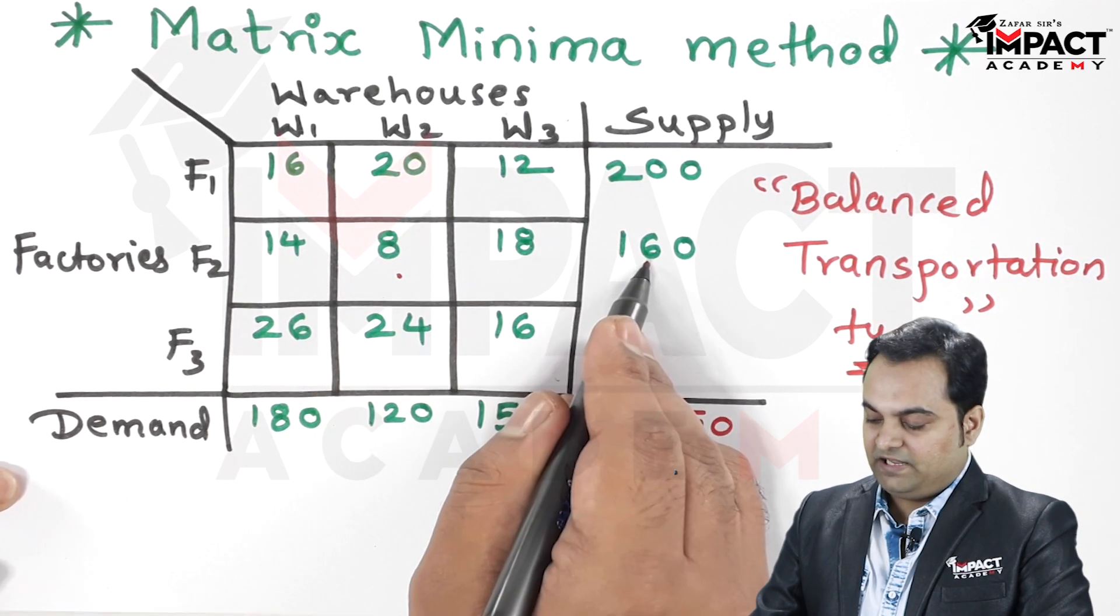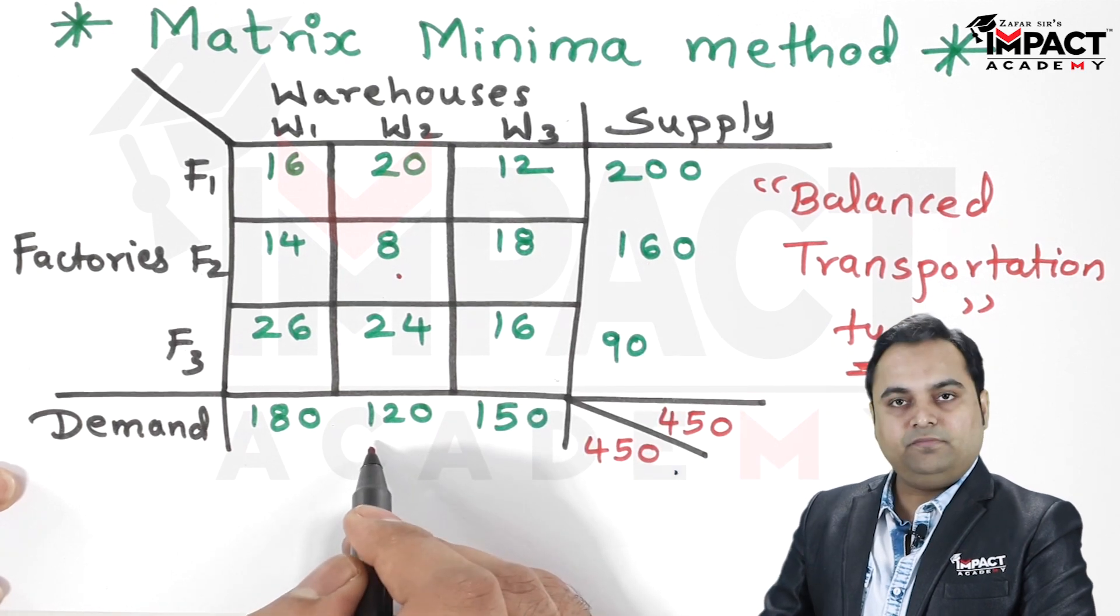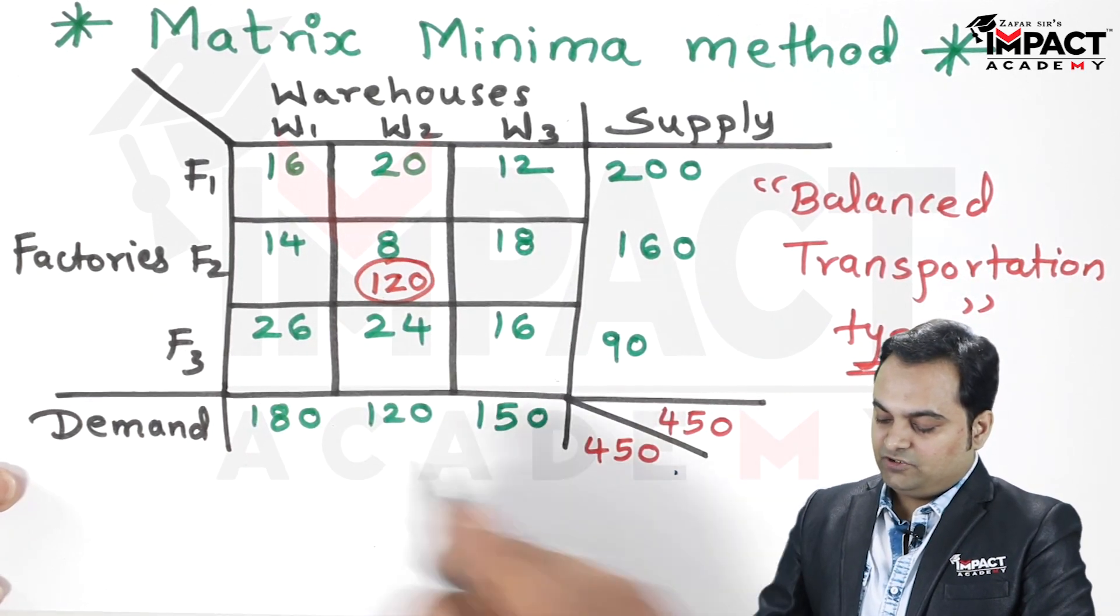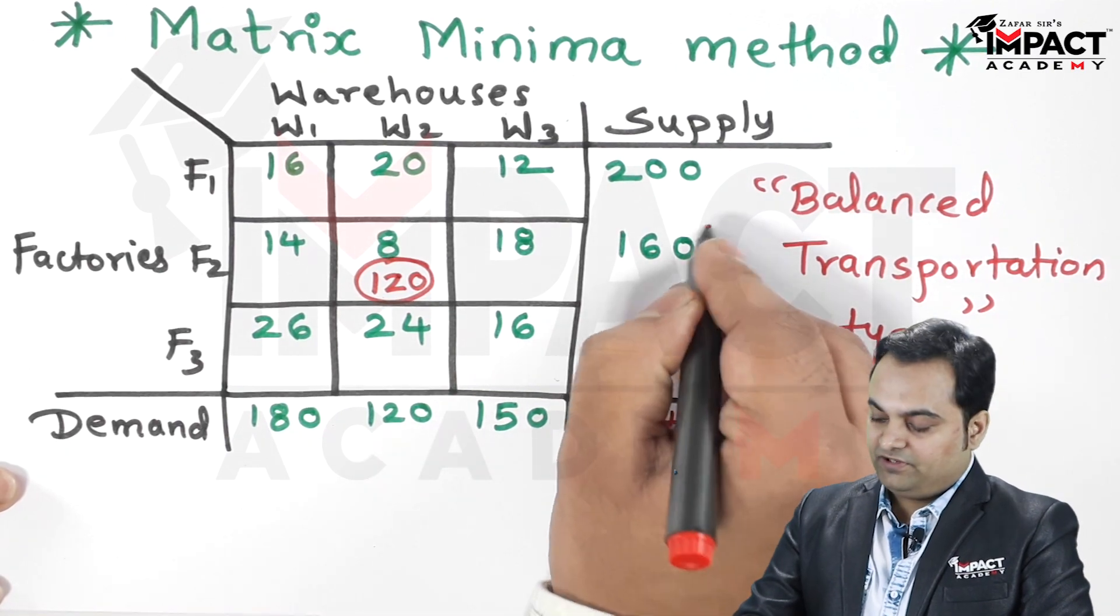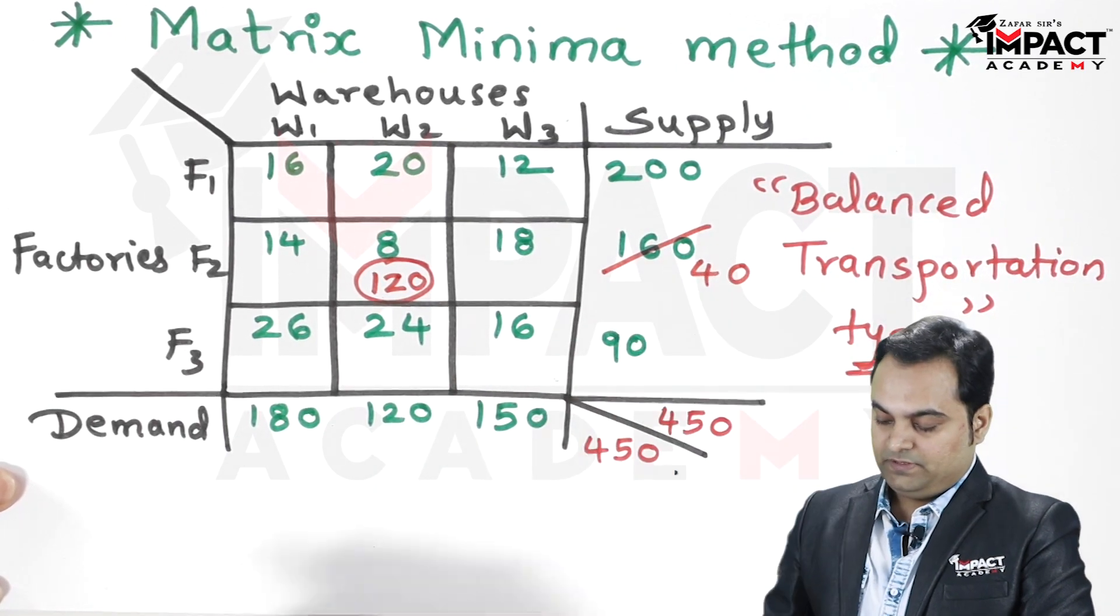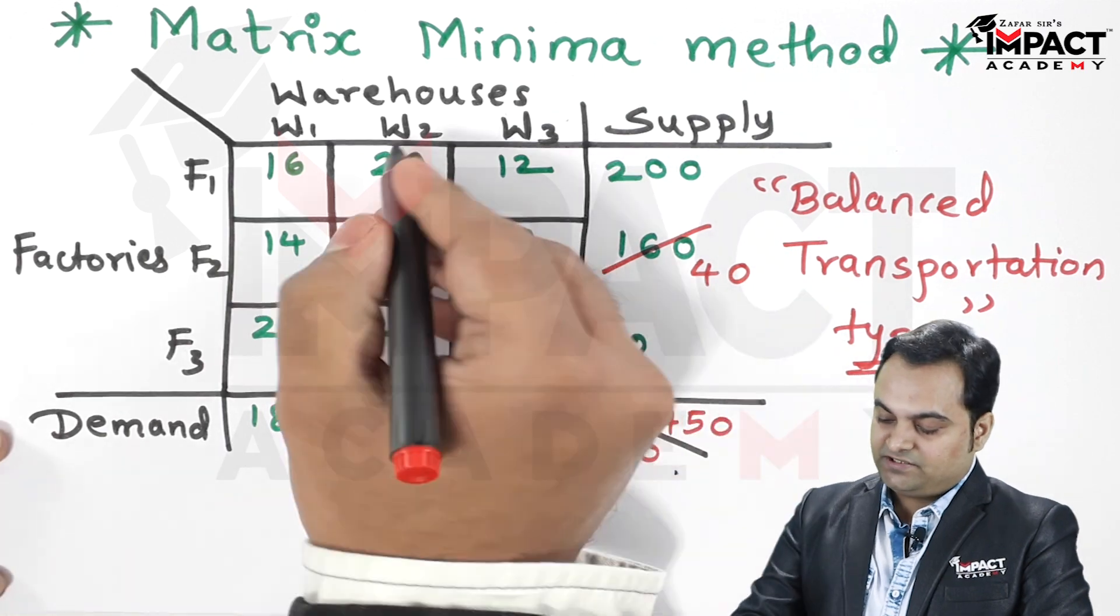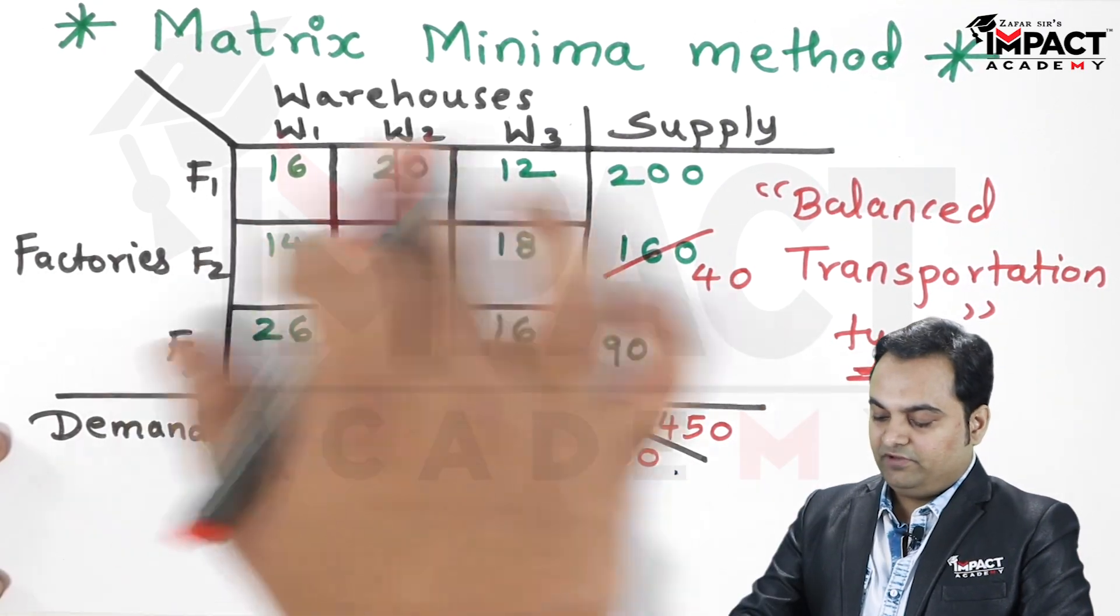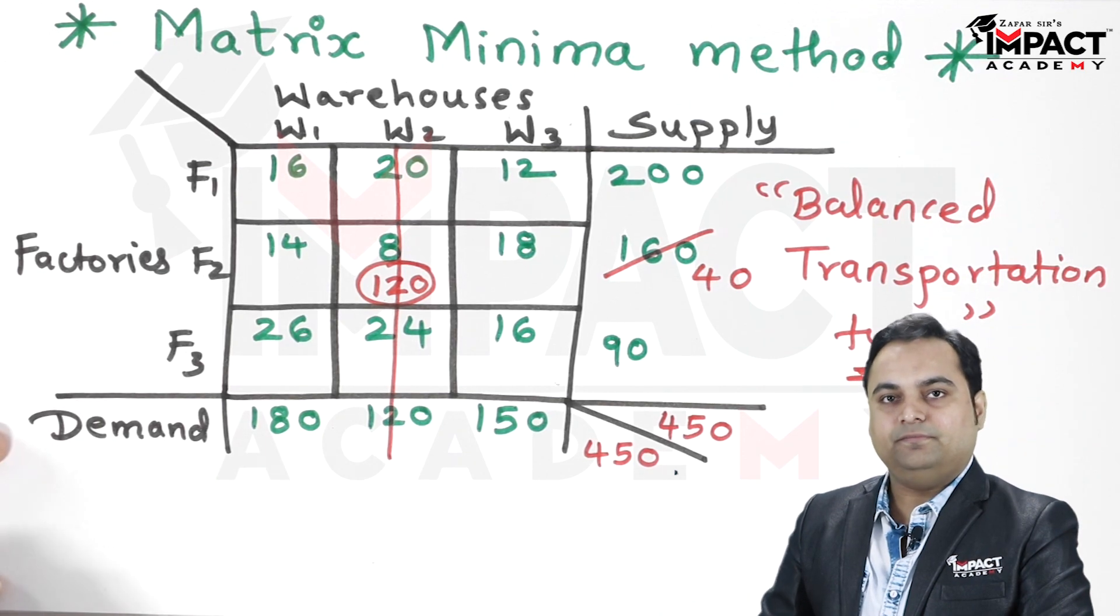So demand can be met completely, so I am writing 120 here. Since 120 will be subtracted from 160, what remains is 40. As the total demand is met, cancel this column completely.